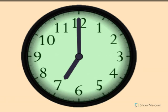7 o'clock. Show me 7 o'clock on your clock. The little hand tells the hour. The little hand points to 7. The big hand tells the minute. Big hand pointing straight up is o'clock.